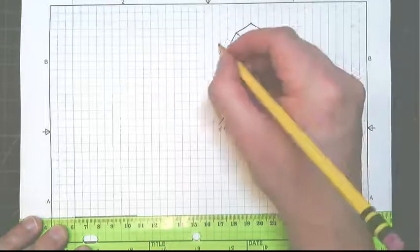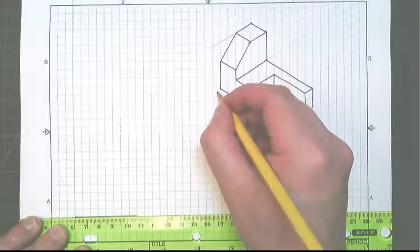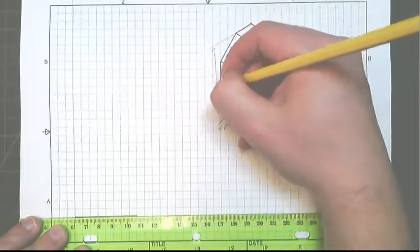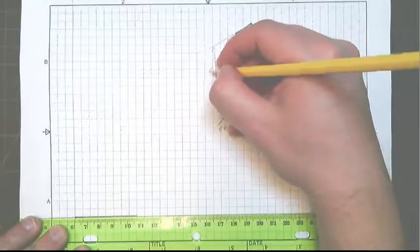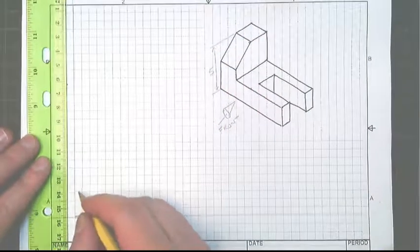So this is the whole height of the object from the top to the bottom: one, two, three, four, five.